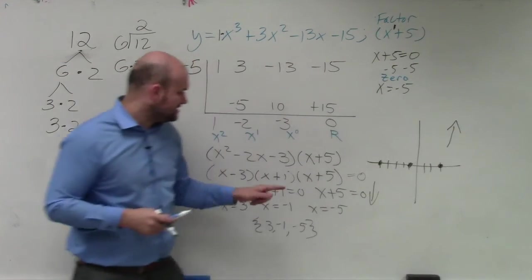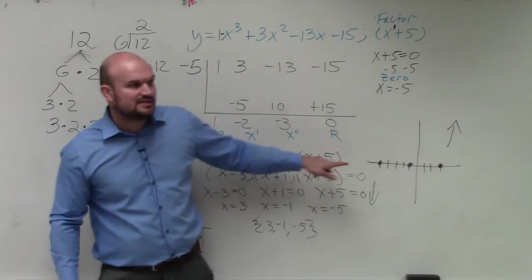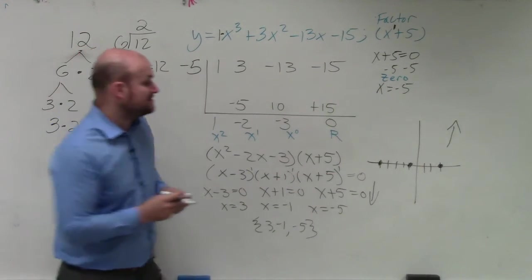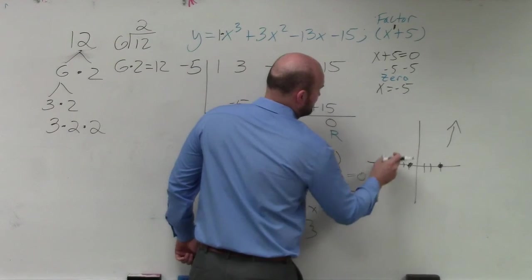Then let's look at the multiplicity of all my zeros. What is the multiplicity of each zero? One, right? So therefore they cross at every single zero. So the graph would look something like this.